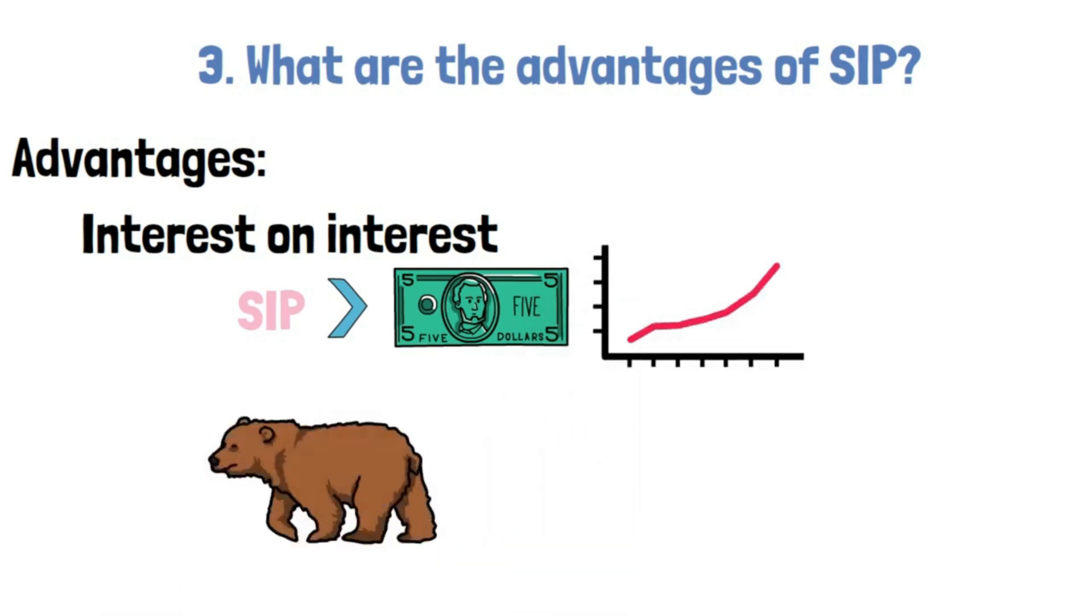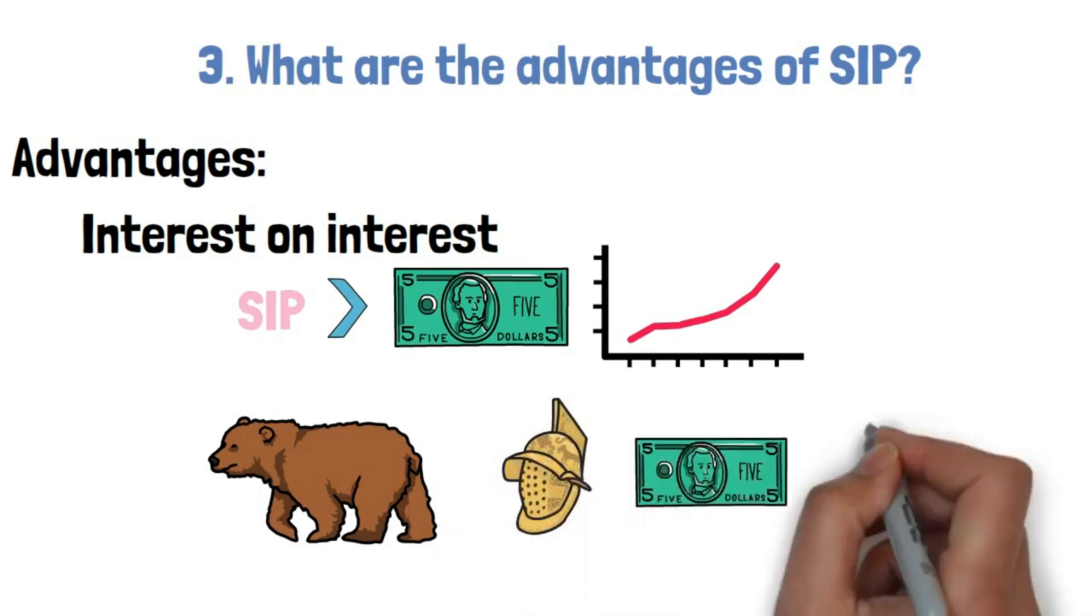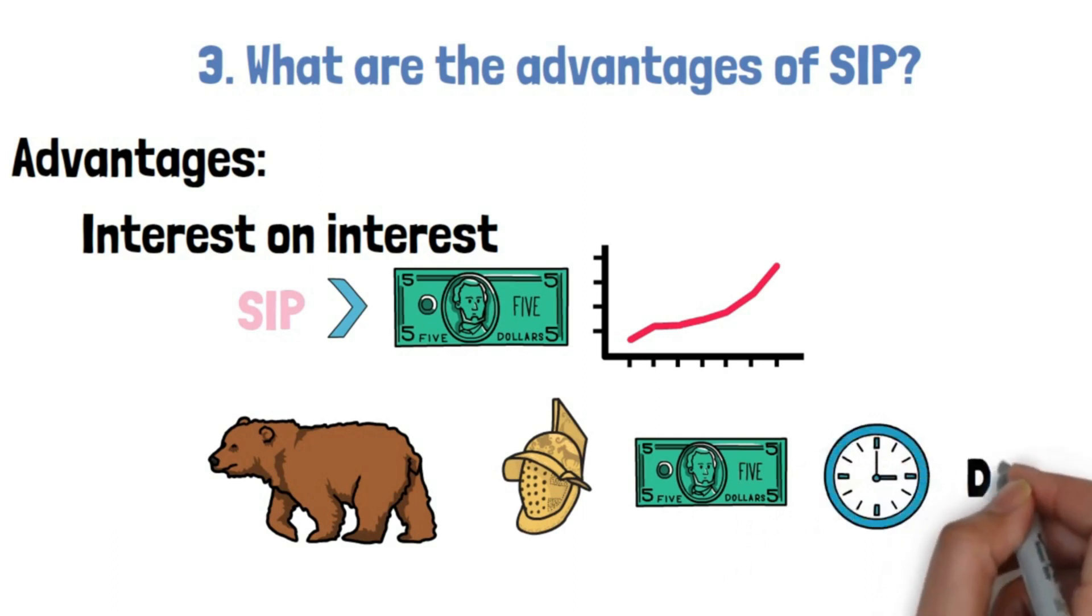In a bear market, there is an opportunity for protection. Because a SIP comprises a set amount that is continuously and routinely invested, it provides some benefits akin to dollar-cost averaging. One of these is loss mitigation in a down market.